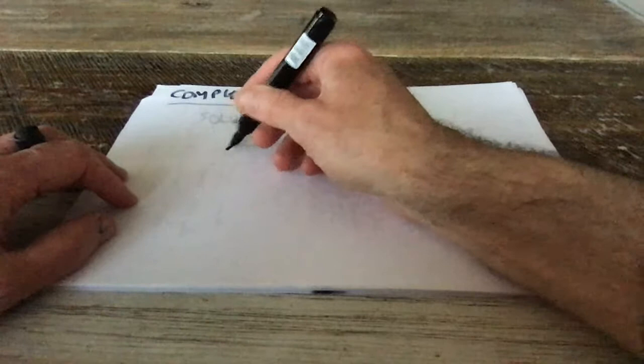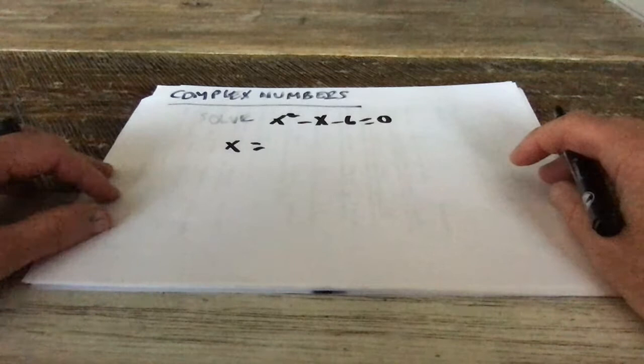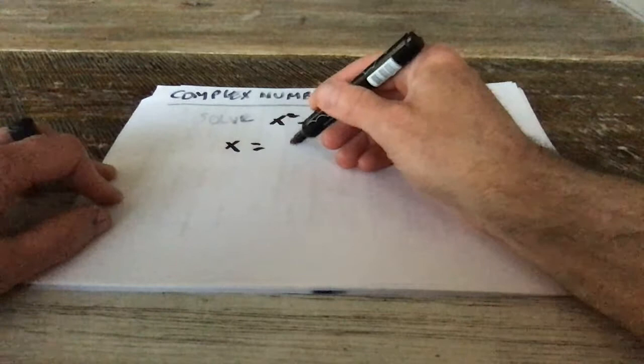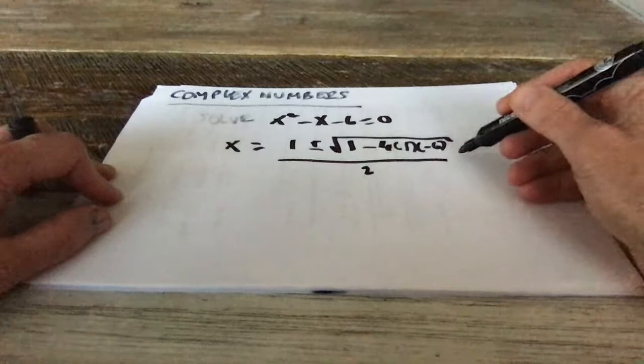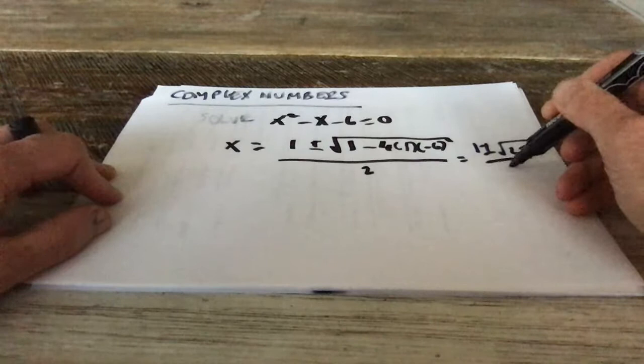But the formula, as we know, is x is equal to minus b plus or minus square root of b squared minus 4ac all over 2a. So in this case, minus b, b is minus 1, so minus b is 1, plus or minus the square root of b squared, which is 1, minus 4a, which is 1, and c, which is minus 6, all over 2. And that is 1 plus or minus the square root of 25 over 2. So you get x is 3 and minus 2.